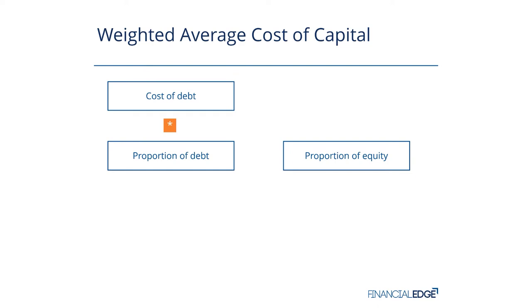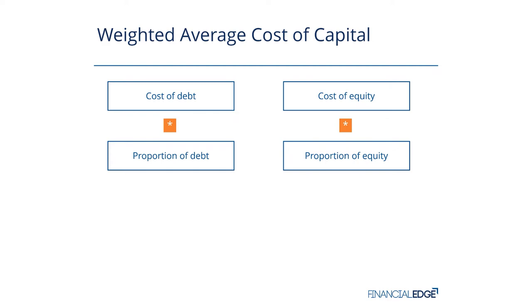Let's say the cost of debt is 5%. Also, how much return do my equity holders require? What's my cost of equity? Let's say that's 10%. So half my funding costs me 5% — that's the debt — and half my funding costs me 10% — that's the equity.